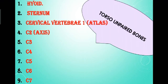And some unpaired bones also present in torso region that are hyoid, sternum, then cervical vertebrae. C1 is also known as atlas vertebrae and C2 vertebrae also known as axis vertebrae, and then C3 to C7 are specific cervical vertebrae.